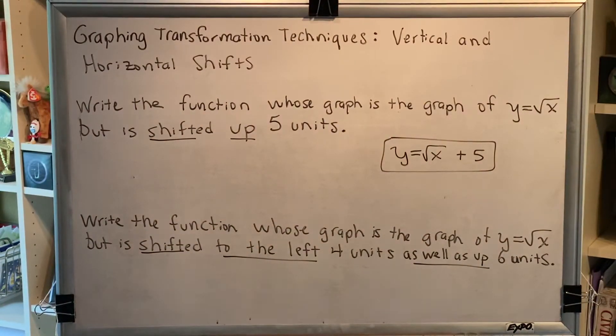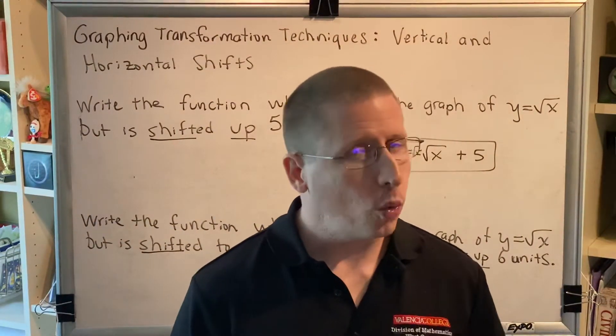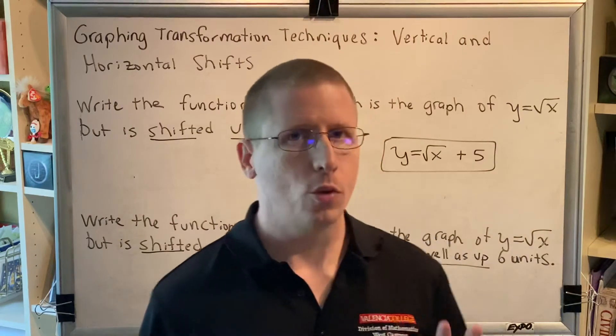Okay, so we make both changes simultaneously. We learned that for horizontal shifting, when you're manipulating an equation, it's backwards of what you would expect.